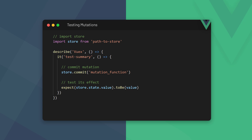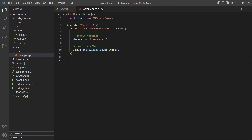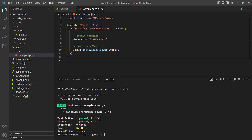When testing mutations, we should check that a state object was mutated correctly. They're simple to test because they're regular JavaScript functions and just need to be invoked for us to test the effect. We don't invoke them directly though — we commit a mutation and Vue will invoke the function behind the scenes. As an example, we'll use an increment mutation in the store that increases a counter by 1 when it's invoked. In the test, we'll commit the increment mutation and test if count went up from 0 to 1. If we run the test in the terminal, it passes.